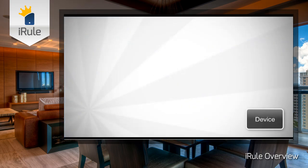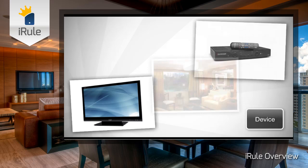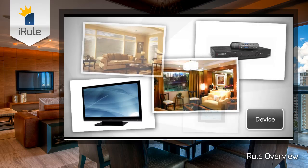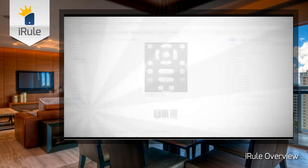A device is anything that you want to control — a TV, your cable box, lights, blinds, heating and cooling, you name it. All of these are called devices. To control these on your remote, we input their device codes onto the iRule Builder and then apply these codes to buttons or links for control of the devices.